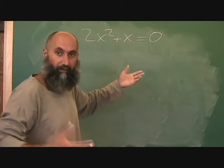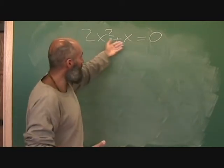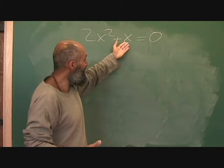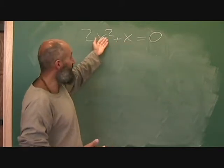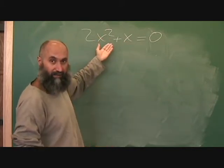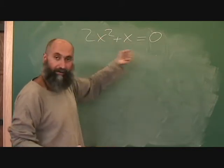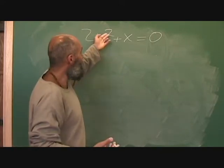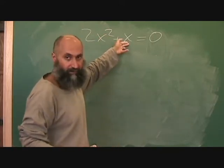GCF meaning greatest common factor. What's similar between both of these? Well, this contains only one x, and this contains two x's — that's what x squared means. So you can take out an x from both of them. You couldn't take out an x squared because that term doesn't have two x's.